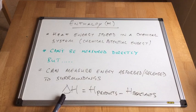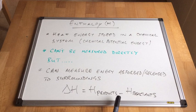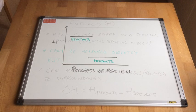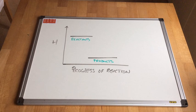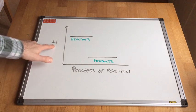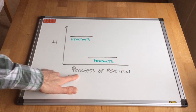The enthalpy change is denoted by the symbol Delta H. The enthalpy change of a chemical reaction is defined as the enthalpy of the products minus the enthalpy of the reactants. To represent this in a typical chemical reaction we can draw an enthalpy profile diagram, which has an enthalpy axis and an x-axis known as the progress of reaction axis.